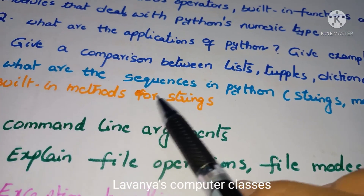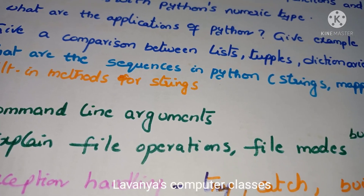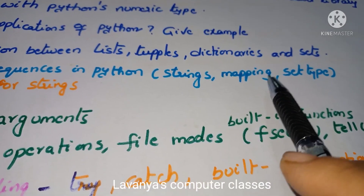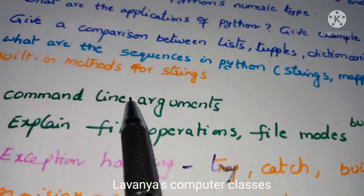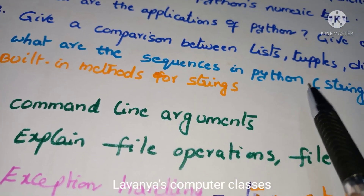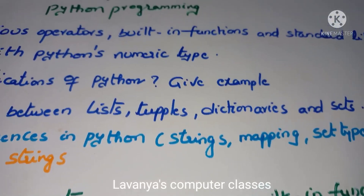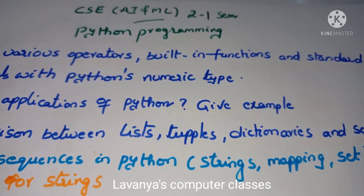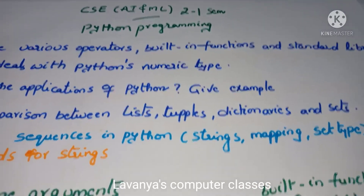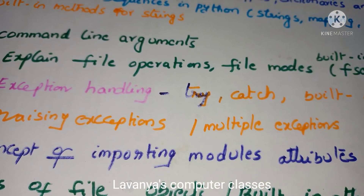Next: what are the sequences in Python? Sequences include strings, lists, and tuples. Read about strings, mappings, and set types. Also read built-in methods for strings, built-in methods for lists, and built-in methods for tuples. These are all the Unit 1 questions — operators, built-in functions, standard library functions, applications of Python, lists, and tuples.